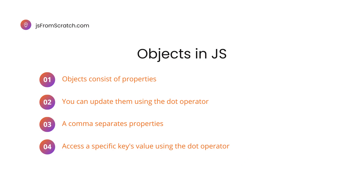In this video, I've shown that an object consists of properties. I've also shown that you can update an already stored object by using the dot operator. You've learned that the comma character is used to separate an object's properties. Finally, I've shown how you can access the values on specific key properties of an object using the dot operator.